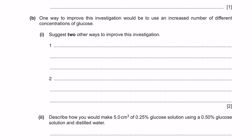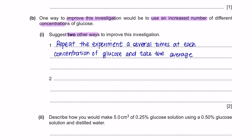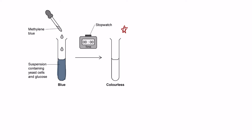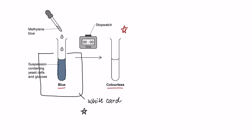Question B: One way to improve this investigation would be to use an increased number of different concentrations of glucose. Part 1 suggests two other ways to improve this investigation. A very common and standard answer is to repeat the experiment several times and calculate the average — this increases reliability. Since this experiment involves observing a colour change, another improvement is to place a white card behind the test tube so the colour change can be observed more clearly.